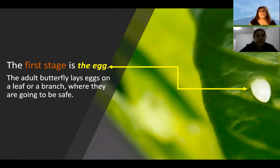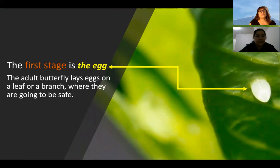The first stage is the egg. The adult butterfly lays the egg on a leaf or a branch where they are going to be safe.